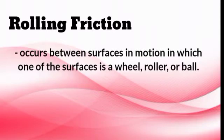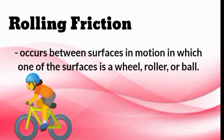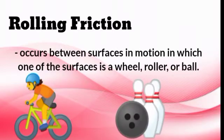Here are some examples of rolling friction: riding a bike, which involves the tires and the ground — the surface of the tires and the surface of the ground interact together. And bowling, which involves the ball and the lane. Let me show you another example of rolling friction.